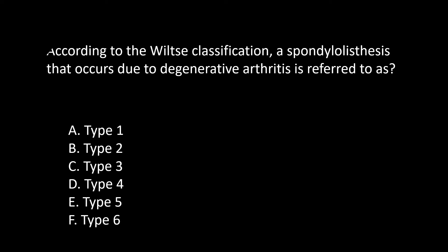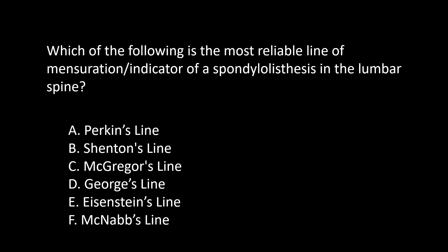Let's try a few questions. According to the Wiltse classification, a spondylolisthesis that occurs due to degenerative arthritis is referred to as a type 3 or degenerative spondylolisthesis. Which of the following is the most reliable line of mensuration indicator of a spondylolisthesis in the lumbar spine?